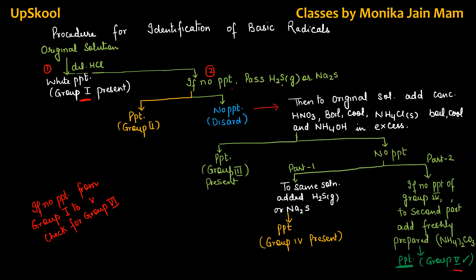If you get precipitate, group 2. But if you again don't get precipitate, discard it. Because H2S gas portion, we don't take forward. So what do we do? This is step 3. Original solution, add concentrated HNO3, boil, cool. Ammonium chloride, boil, cool. And then, ammonium hydroxide in excess. This is for group 3. This was your third step for group 3. But, if you are not getting any precipitate, then what to do? Then, you will divide into two parts. This solution. This same solution you will make into two parts. Part 1 and part 2.